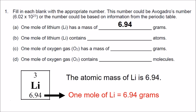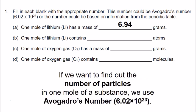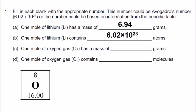In part B, it asks how many atoms there are in one mole of lithium. If we want to find out the number of particles in one mole of a substance, we use Avogadro's number: 6.02 times 10 to the 23rd atoms in one mole of lithium.